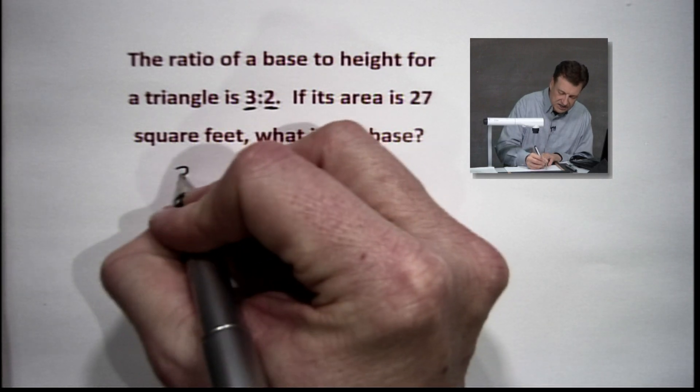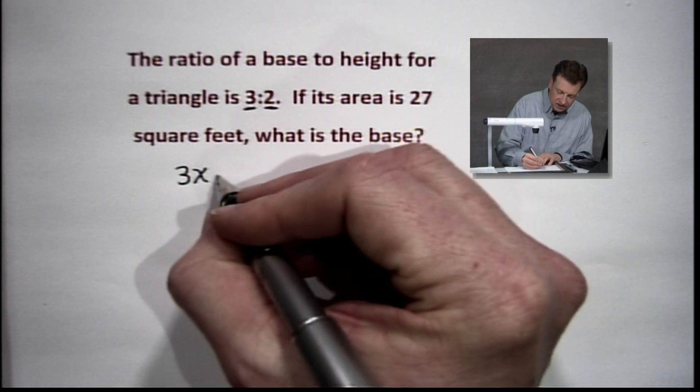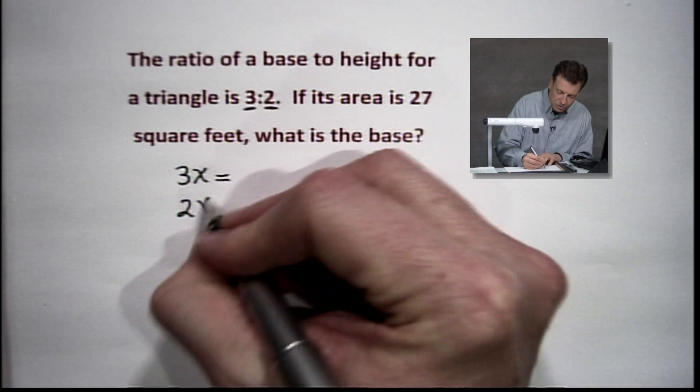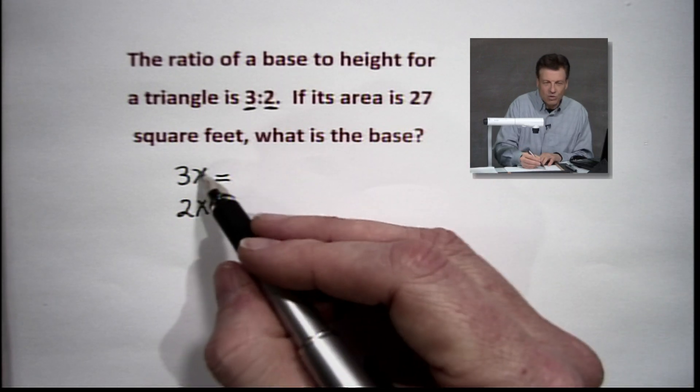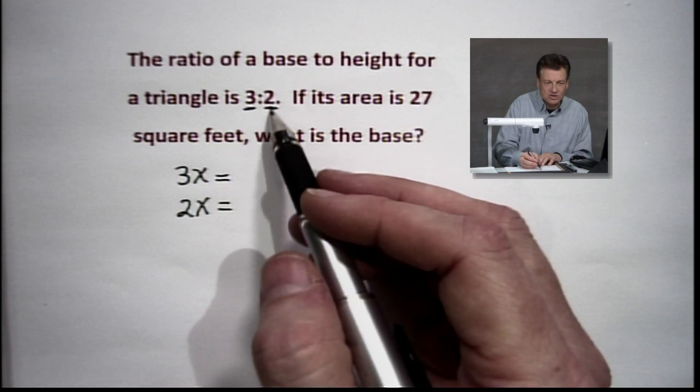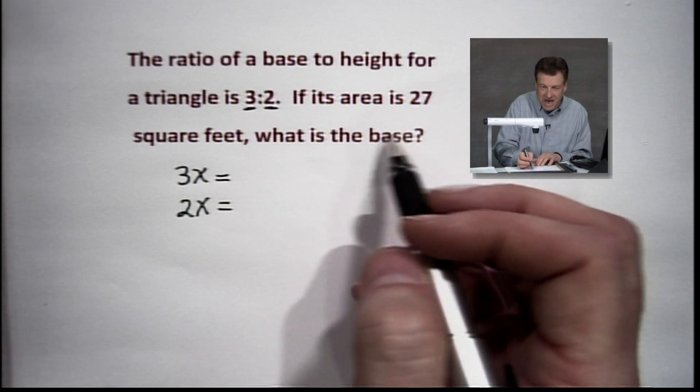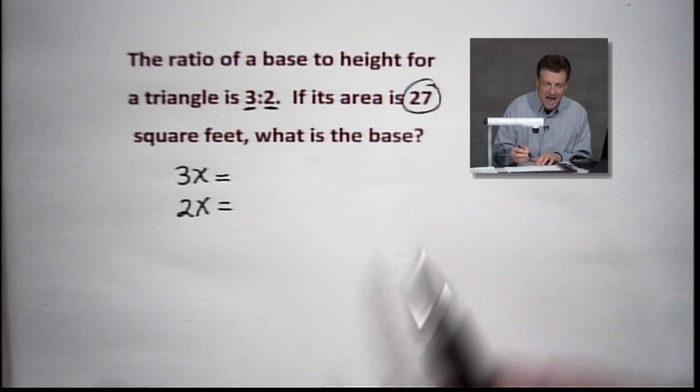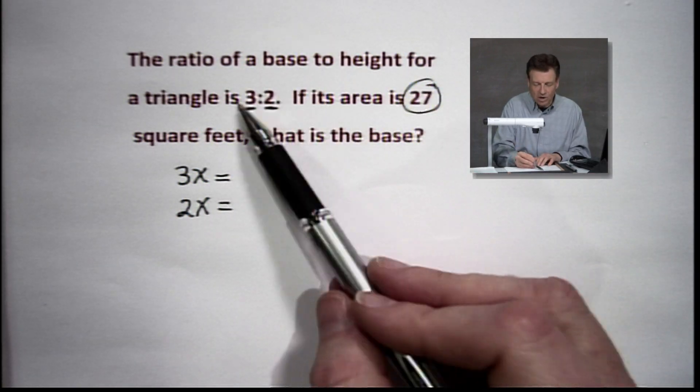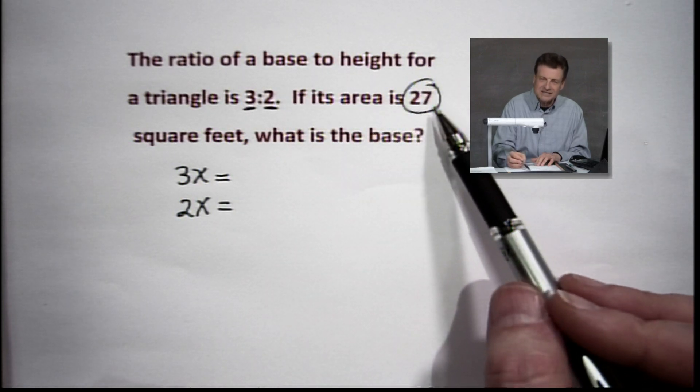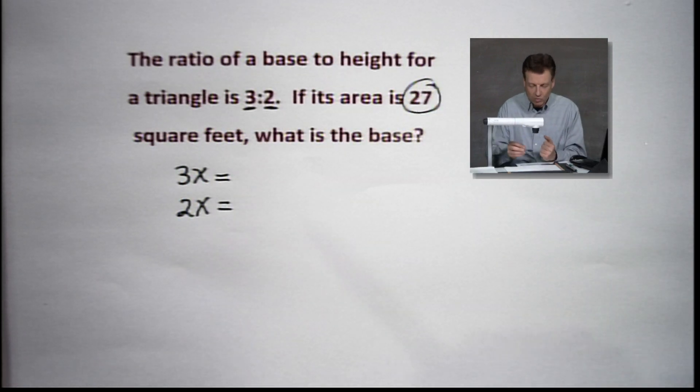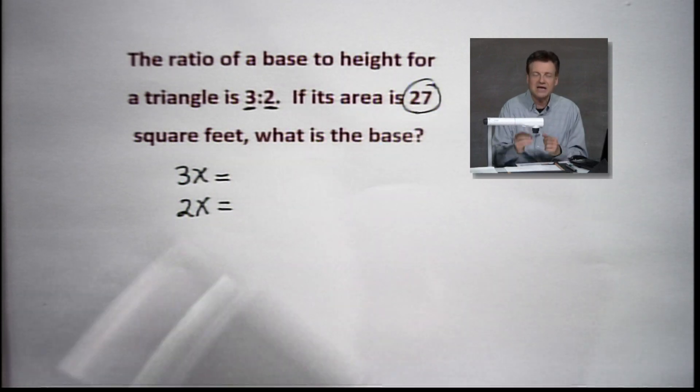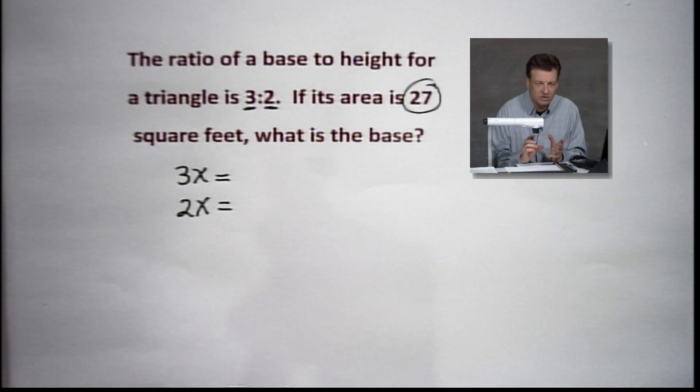But let's do this. Let's consider 3x and 2x because what we're going to say is we're going to multiply both of those numbers, 3 and 2, by some value to make this 27 happen. This leaves it wide open, very wide open. But this 27 closes the door because only one value of x is going to make this work.